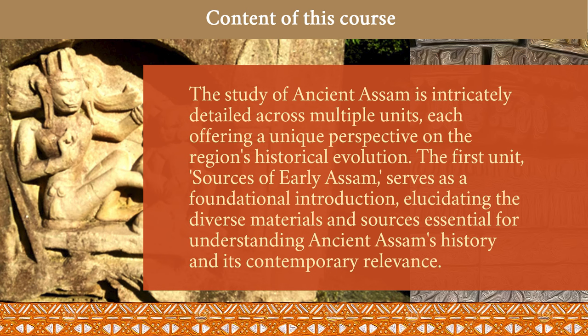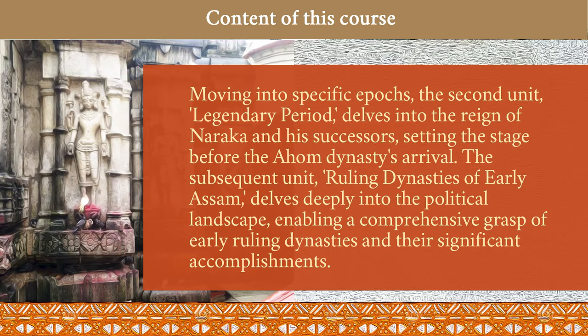The first unit, Sources of Early Assam, serves as a foundational introduction, elucidating the diverse materials and sources essential for understanding ancient Assam's history and its contemporary relevance. The second unit, Legendary Period, delves into the reign of Naraka and his successors, setting the stage before the Ahom dynasty's arrival. The third unit, Ruling Dynasties of Early Assam, delves deeply into the political landscape, enabling a comprehensive grasp of early ruling dynasties and their significant accomplishments.